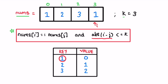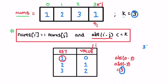Now we need to find the absolute difference. The stored value represents i and the current index represents j. The absolute difference is |0 - 3| = 3. We check if 3 is less than or equal to k. Yes, 3 is less than or equal to 3, so this condition is true. So we return true as the output.